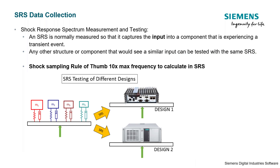We're not testing what's going on on the part, although if you have channels, it's a good idea to take some accelerometers on the part when you fixture it in the shaker. You'll be able to compare the severity from your shock test with the severity in the field. But it's not required — what we want is the input. You also want to sample a lot higher than we do for noise and vibration work. For frequency domain work, we sample at two and a half times the max frequency we want to analyze.